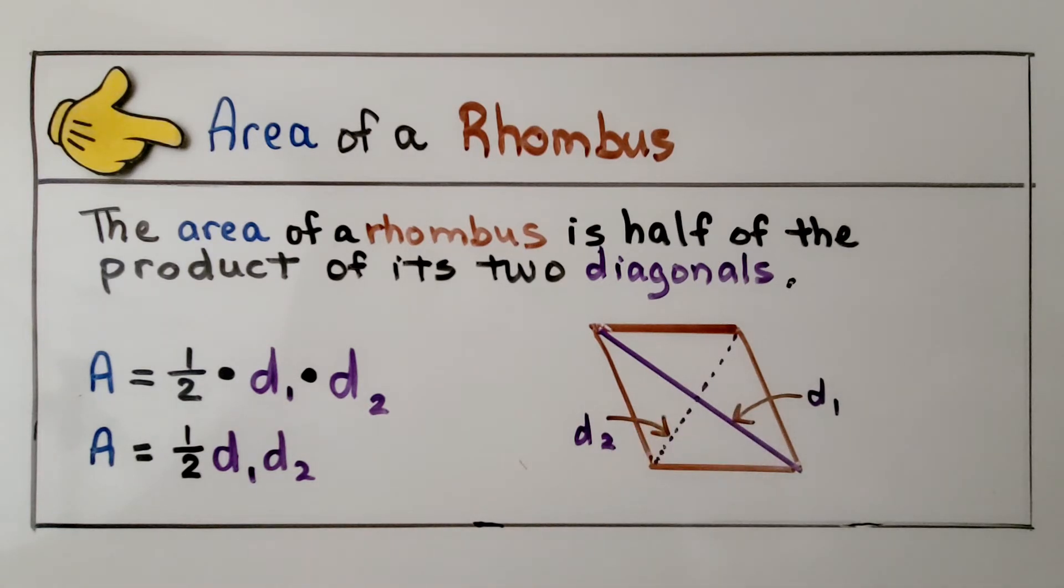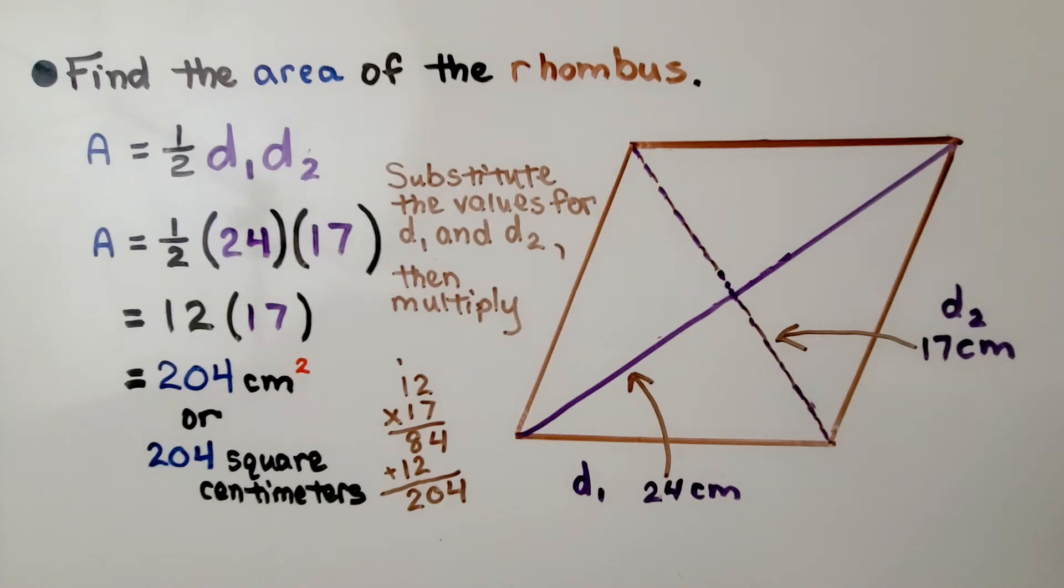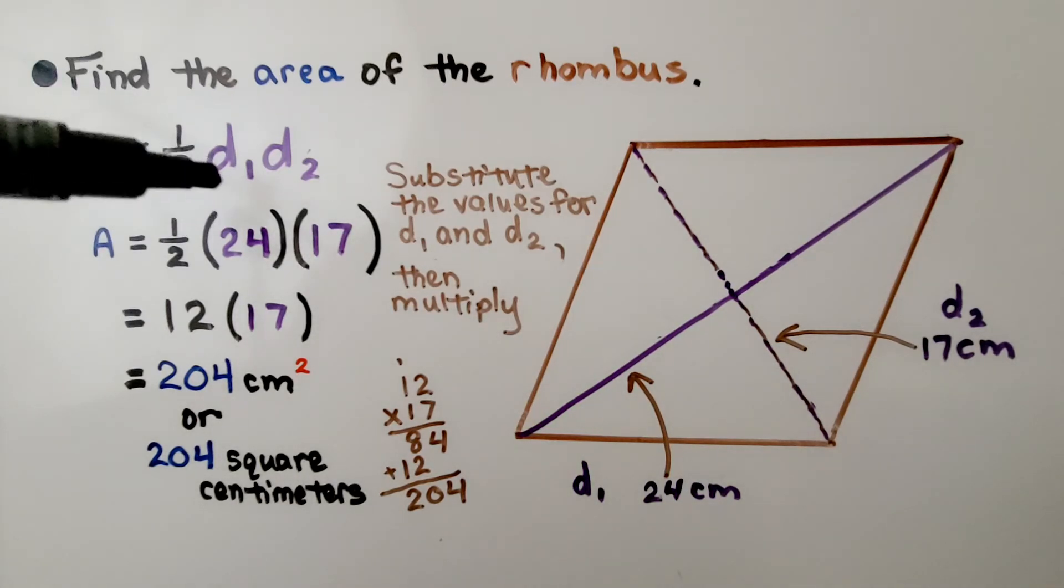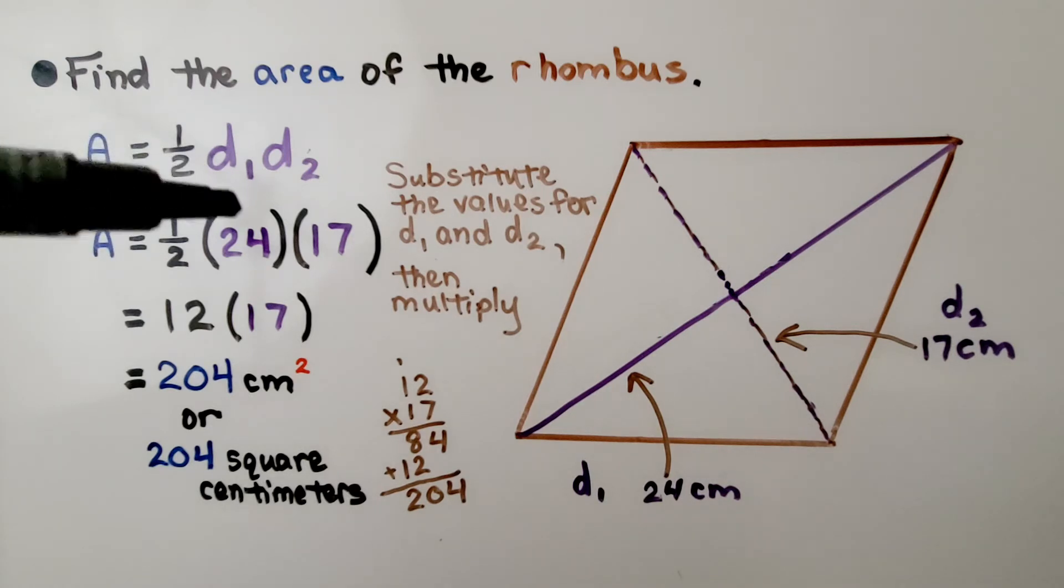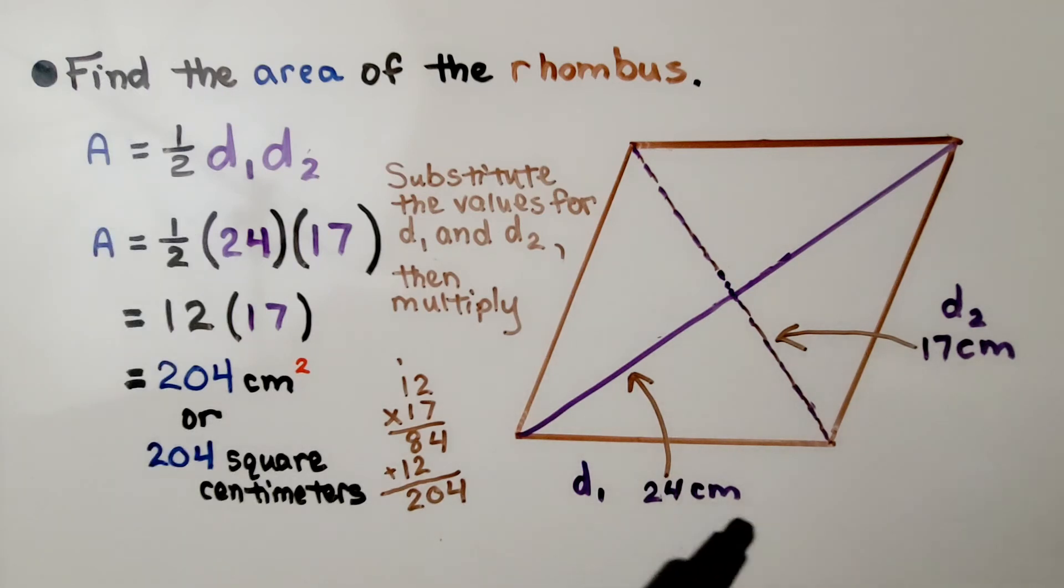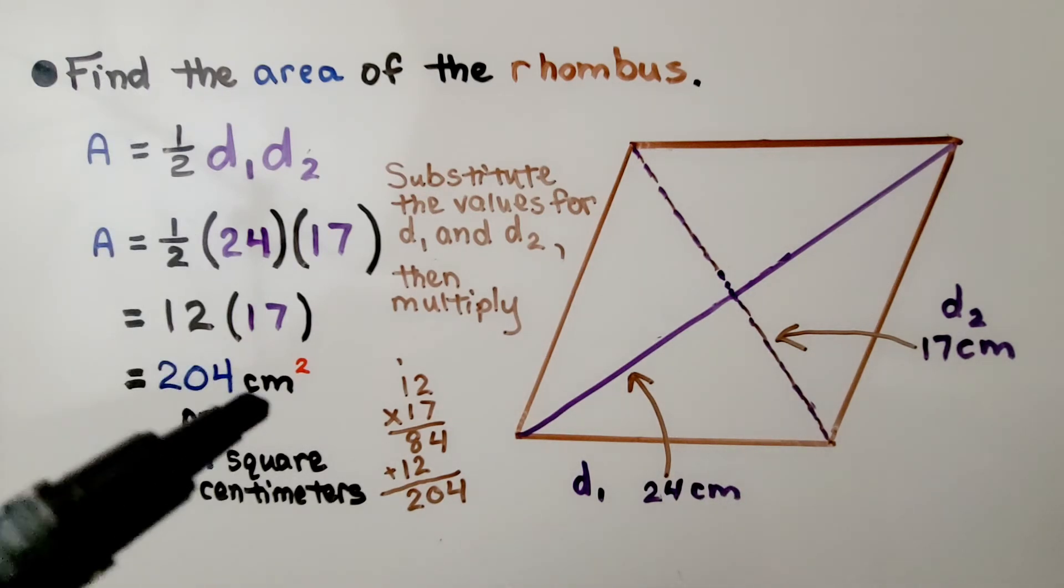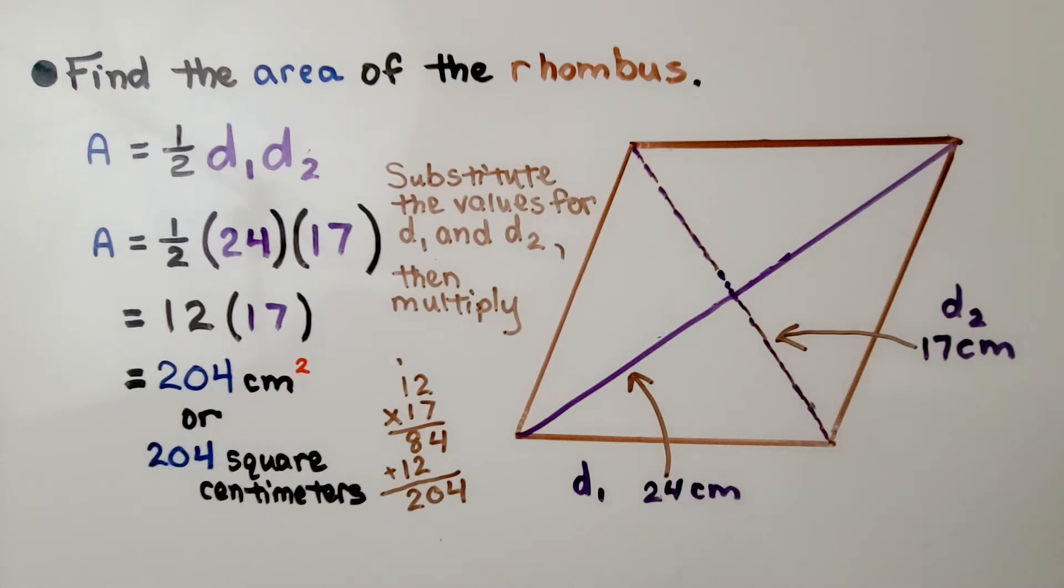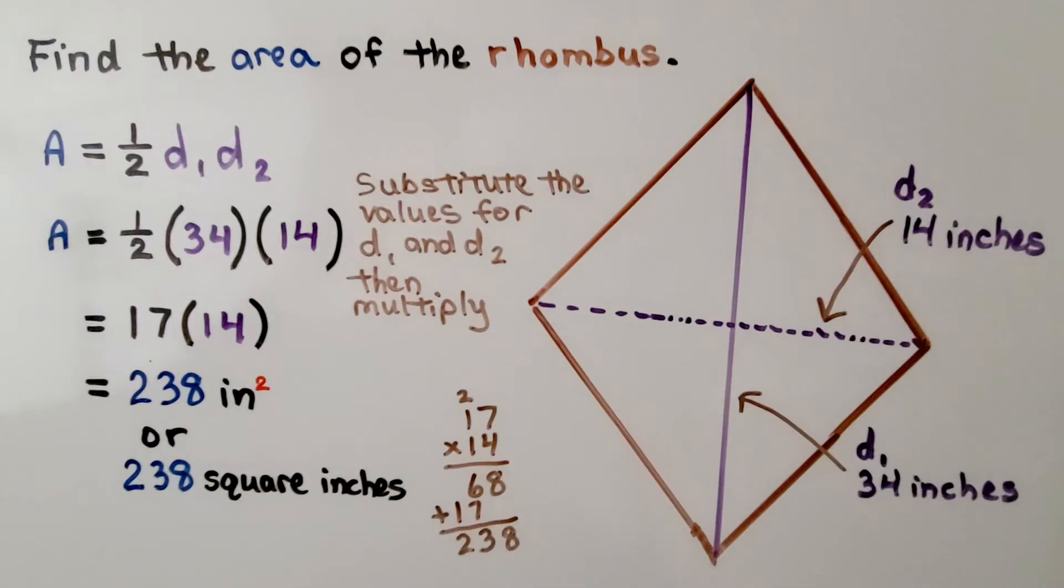Let's walk through some examples. It's telling us to find the area of the rhombus. d sub 1, the first diagonal, is 24 centimeters, and d sub 2, the second diagonal, is 17 centimeters. We substitute the values and then multiply. We have half times 24—that's 12—we multiply that to 17, we get 204. That is in centimeters, so we have 204 square centimeters.